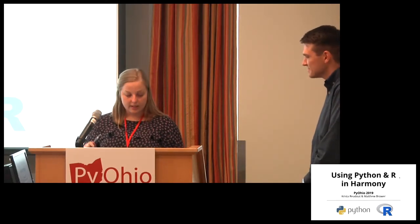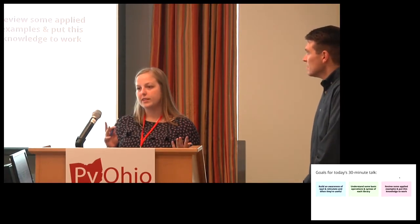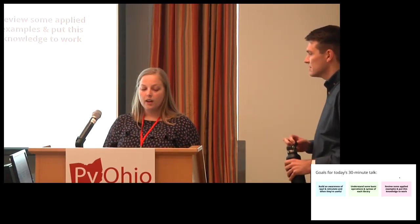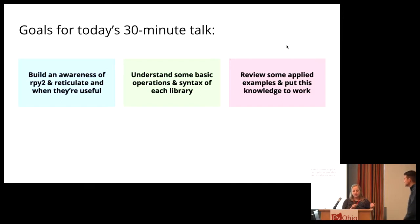During the talk today, we have three main goals. We want to bring awareness of RPy2 and Reticulate. RPy2 is a way to run R code in Python, and Reticulate is a way to run Python code in R. I'm going to go through a brief use case with RPy2, and then Matthew's going to do a use case with Reticulate. We want to share some basic syntax, ways to use these packages, things we learned, and a deployed example that we both did independently.